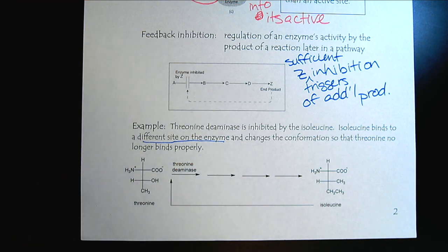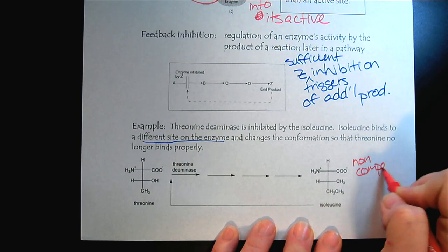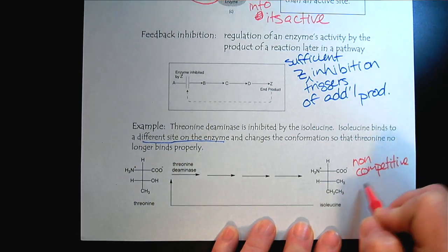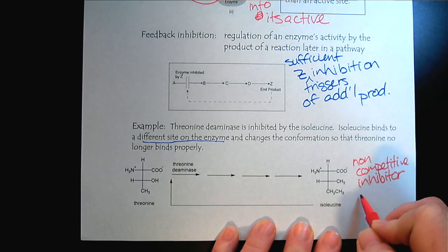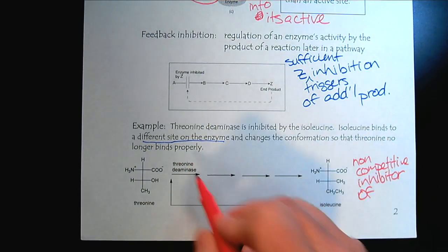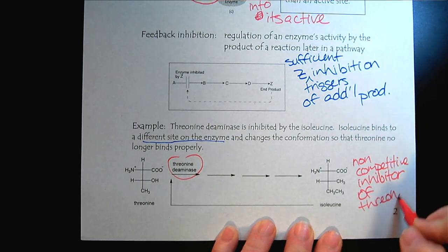So how could we describe isoleucine? So isoleucine is a non-competitive inhibitor of threonine deaminase.